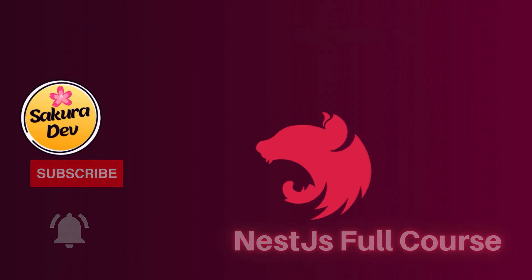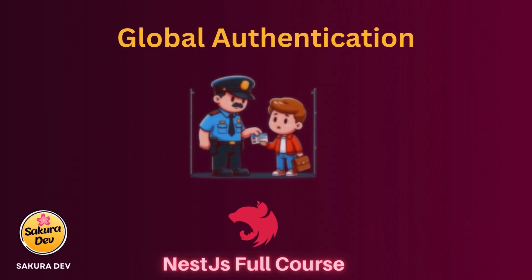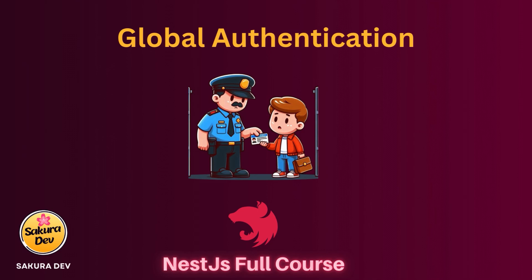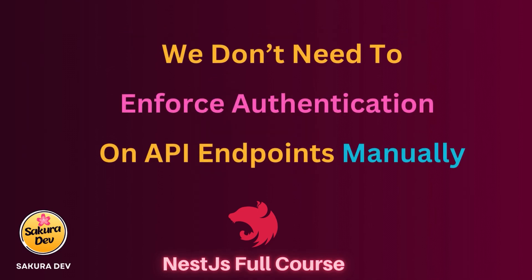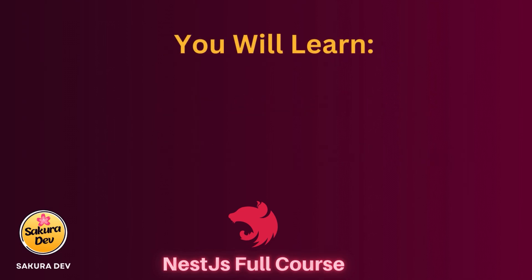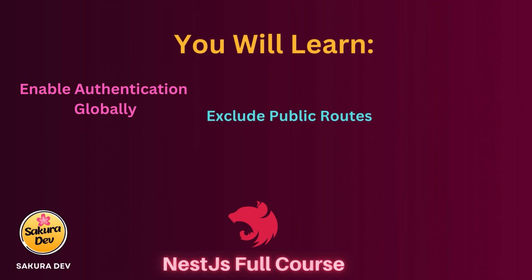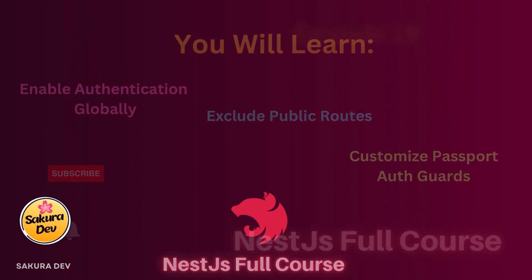Welcome back to the NestJS full course. In this video we're going to talk about how we can enable authentication with a specific auth guard globally, so we don't need to mark our API endpoints with auth guards manually. The topics covered include: enabling authentication globally with a specific guard like a JWT auth guard, how to exclude public API endpoints from the global authentication system, and how to customize the Passport auth guards.